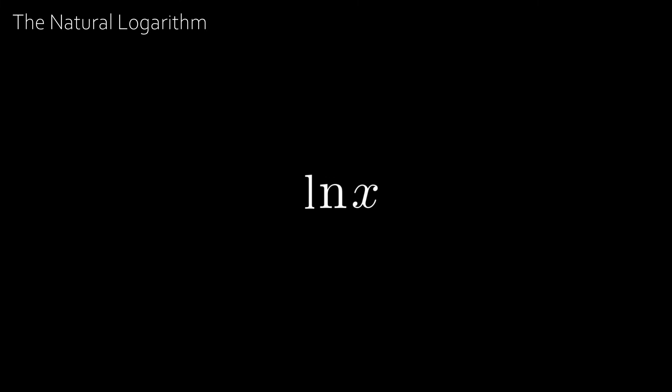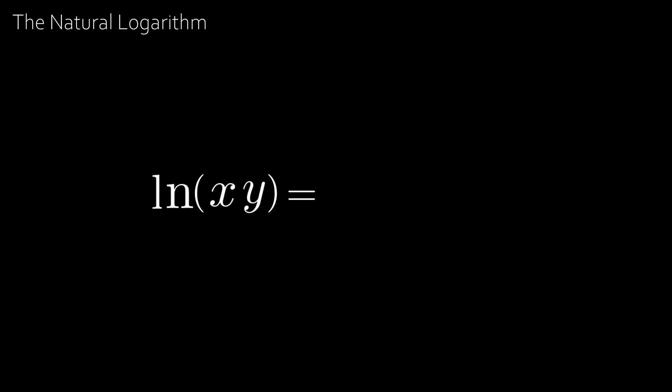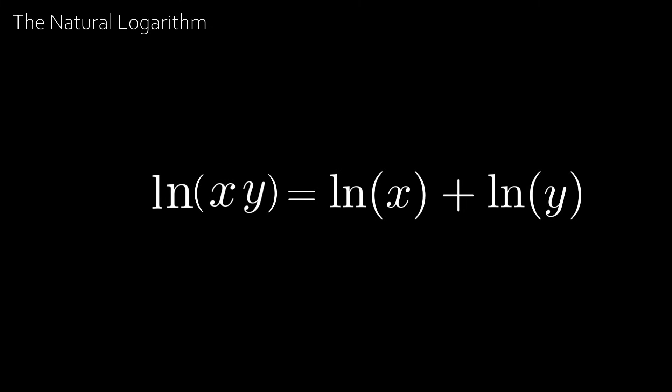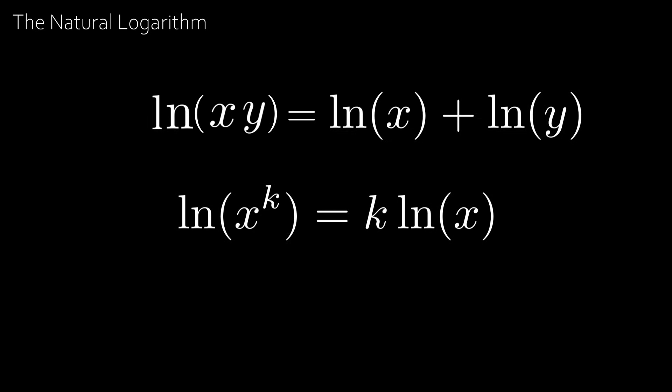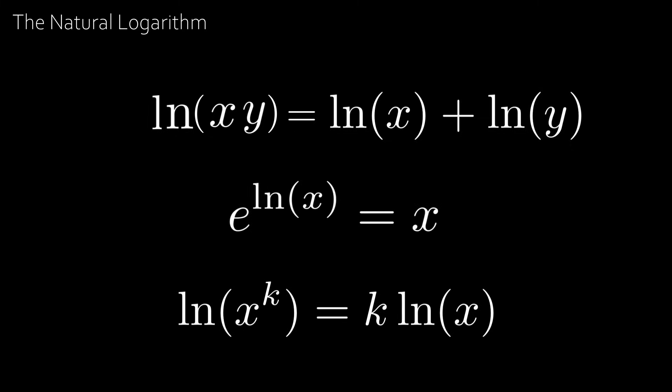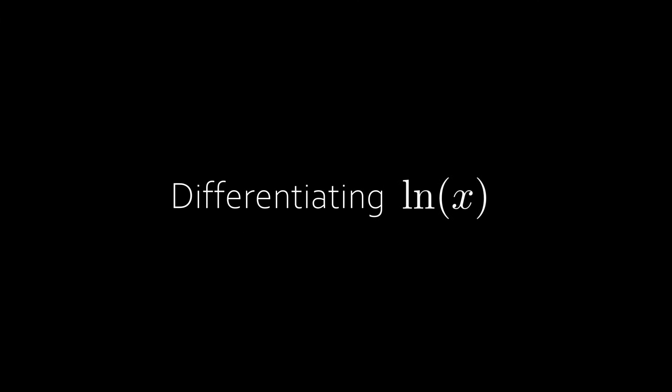Logarithms have some very important properties: the logarithm of a product is the sum of logarithms, which implies that ln(xᵏ) = k·ln(x). Since exponentials and logarithms are inverse functions, e^(ln x) = x. We can also see that ln(x/y) = ln(x) − ln(y). The natural logarithm is one of the most important functions in mathematics, and we can start to see its usefulness when we differentiate it.